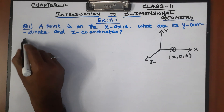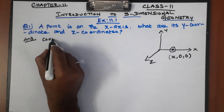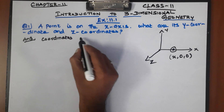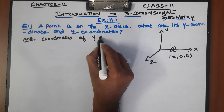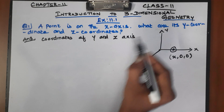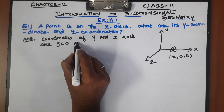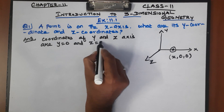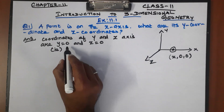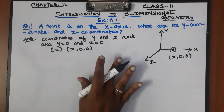Answer: the coordinates of y and z are zero — that is, y equal to 0 and z equal to 0. So the point is found as (x, 0, 0). This is the answer.